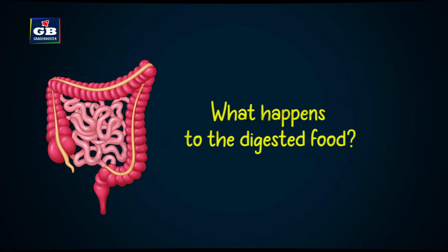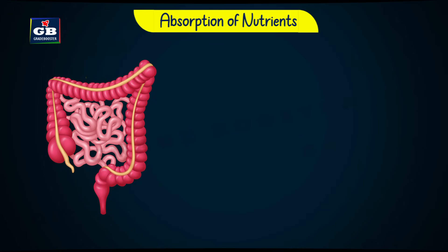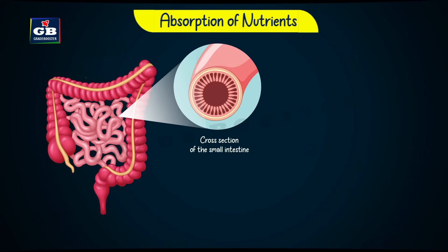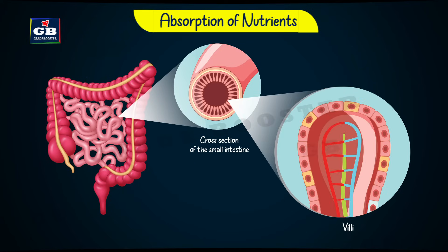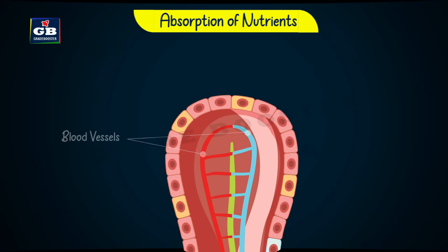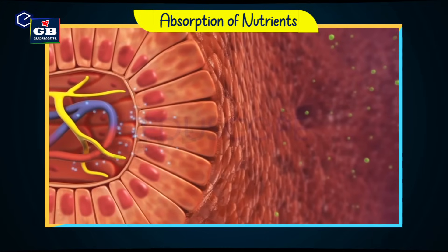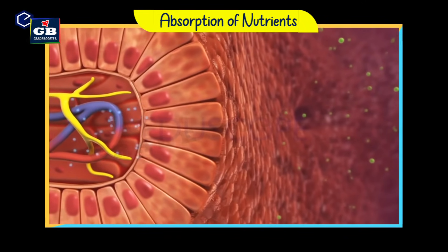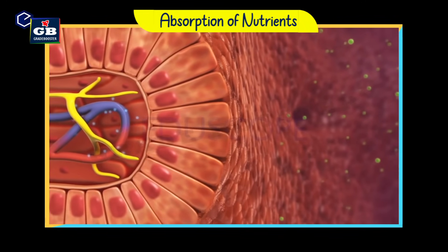The nutrients from the digested food are absorbed into the walls of the small intestine. The inner lining of the small intestine has finger-like projections called villi. Each villus is richly supplied with blood vessels and lymph vessels. The digested nutrients are absorbed into the villi and supplied to different parts of our body.